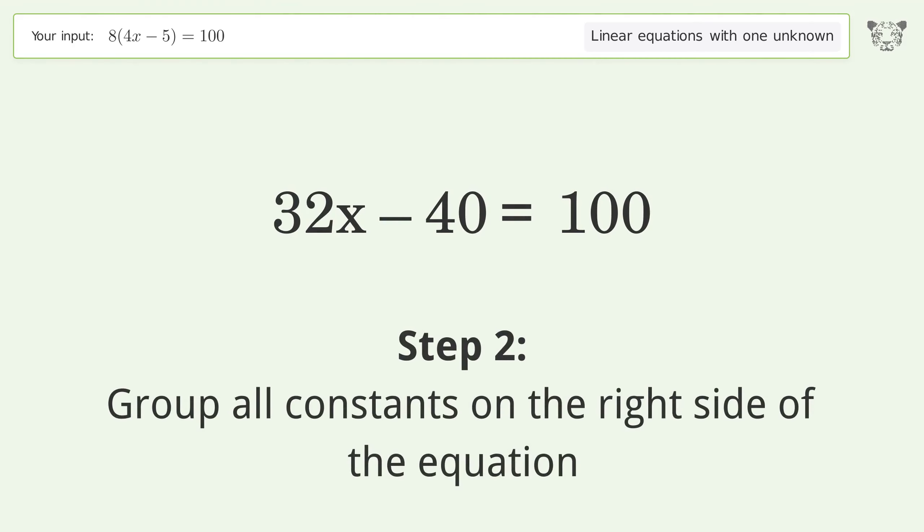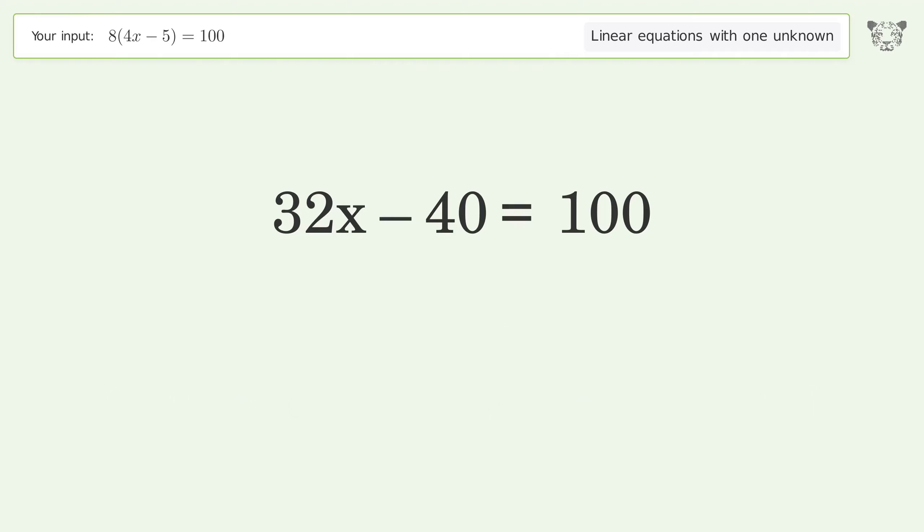Group all constants on the right side of the equation. Add 40 to both sides. Simplify the arithmetic.